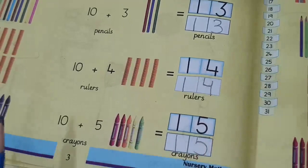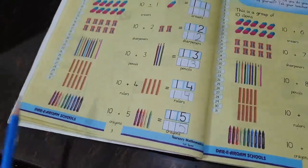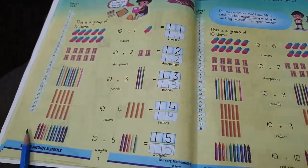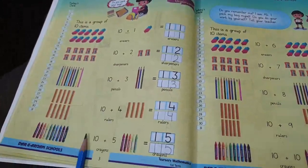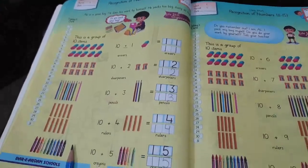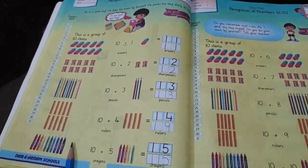Okay, beta. So, what we have learned today, we have recognized numbers eleven to fifteen. Make sure to revise your lesson at home. Inshallah, meet you next time. Take care. Alhamdulillah. Allah Hafiz.